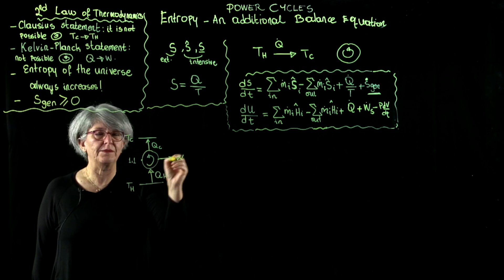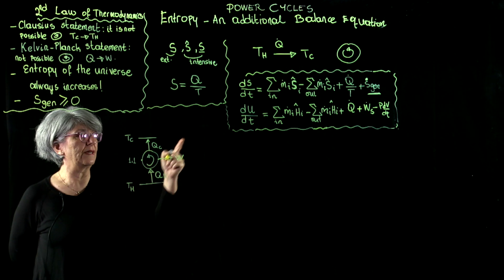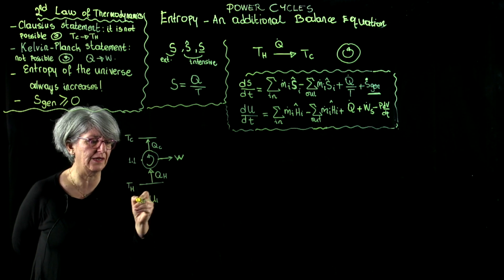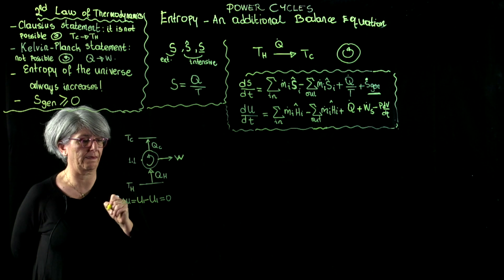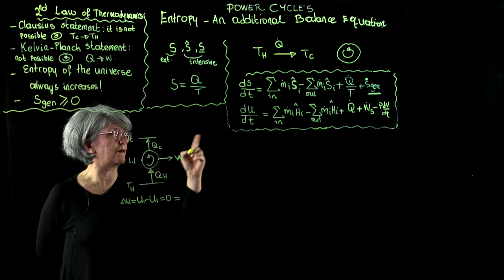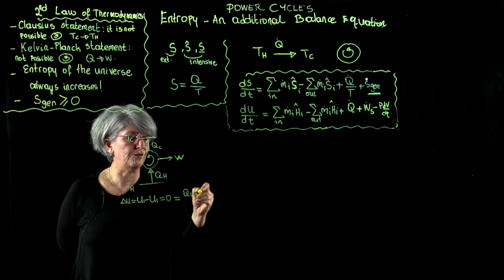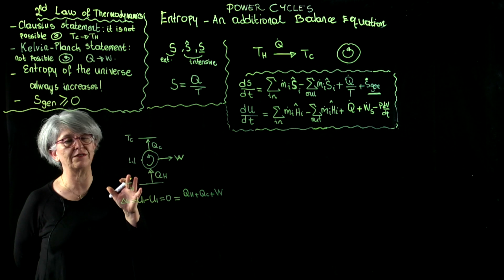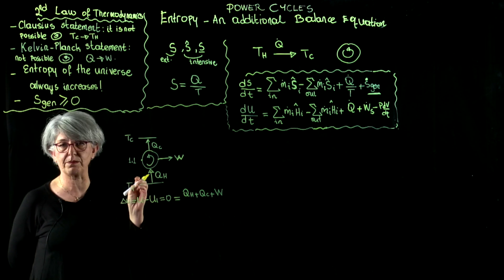Now, let's perform the first law and the second law analysis on this cyclic process. The first law analysis goes as u1 minus u1, or delta u, is equal to zero. My system is the cycle itself. On the other side, I have q hot, I have q cold, I have work—shaft work, boundary work, and so on.